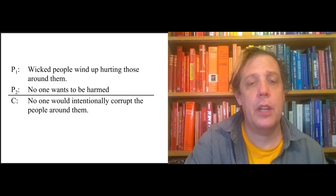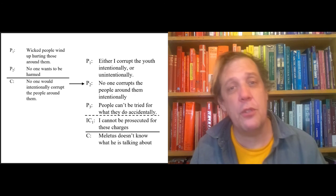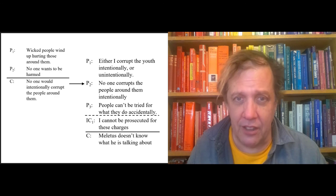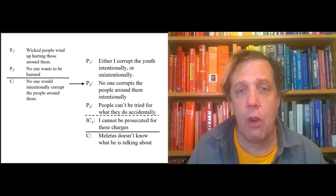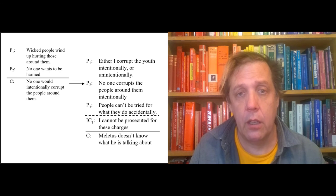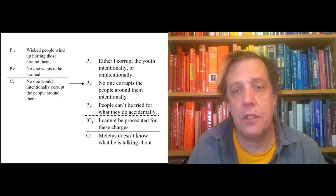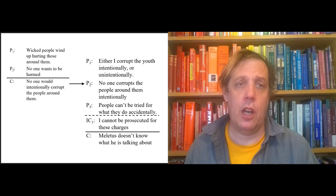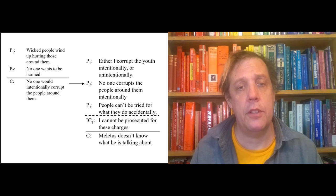And then this, again, plays a role as a preface in the next argument. Either I corrupt the youth intentionally or I do so unintentionally. No one corrupts the people around them intentionally. That's what was just shown. But you can't be tried for what you do accidentally. Right? Therefore, I can't be prosecuted on these charges. Therefore, Meletus doesn't really know what he's talking about. So that ends the dialogue portion and standard argument form portion of the defense.